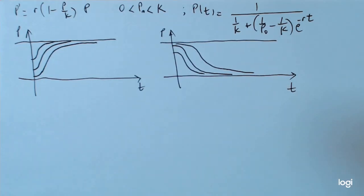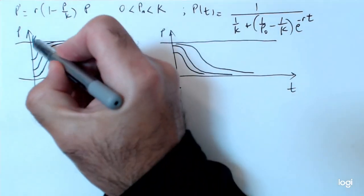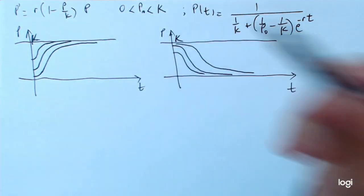Okay, so in this second part, I want to point out the behavior of the solution of the logistic equation just in the interval 0 to k. I forgot to put here 0 and k. So take a moment to write this down.